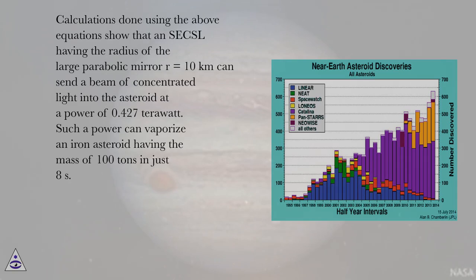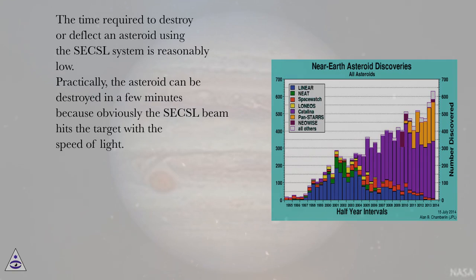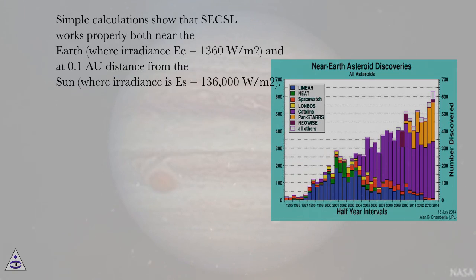Calculations show that a system having a large parabolic mirror radius of R = 10 kilometers can send a beam of concentrated light into an asteroid at a power of 0.427 terawatts. Such power can vaporize an iron asteroid with a mass of 100 tons in just 8 seconds. The system can destroy or deflect an asteroid in a few minutes, since the beam hits the target at the speed of light. The system works properly both near the Earth, where irradiance E = 1360 W/m², and at 0.1 astronomical units from the Sun, where irradiance S = 136,000 W/m².